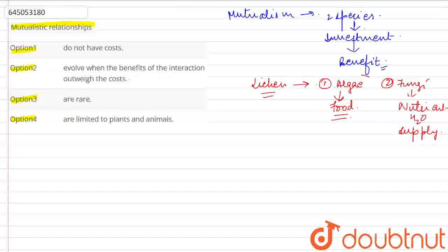So here, the algae's food preparation is the investment. The fungi's nutrients and water supply is also the investment.